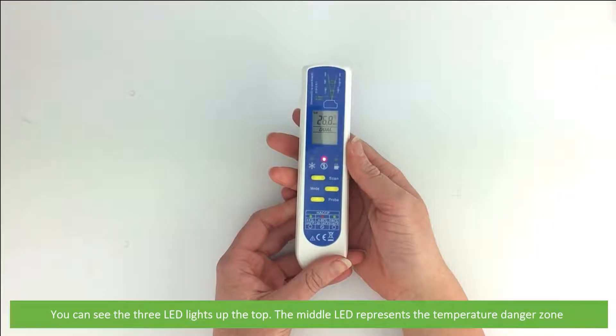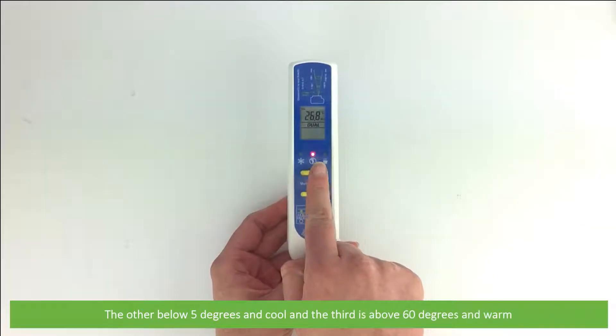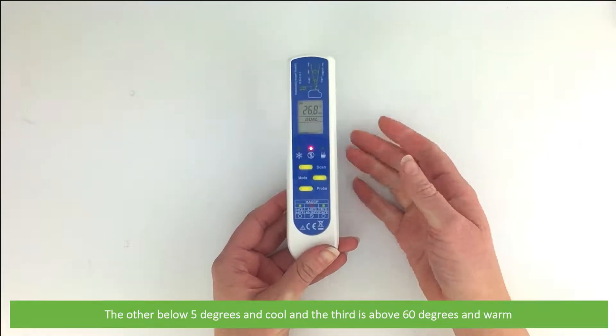You can see the three LED lights up the top. The middle represents the danger zone, and the others below 5 degrees for cool and above 60 degrees for warm.